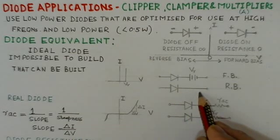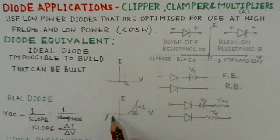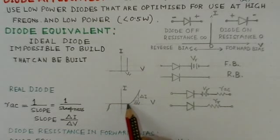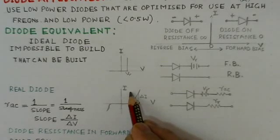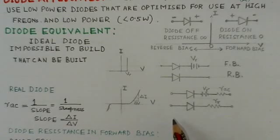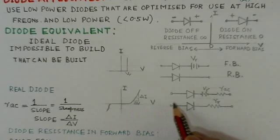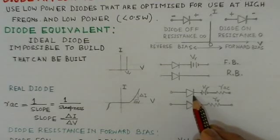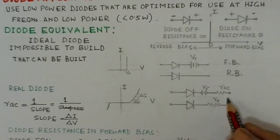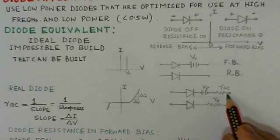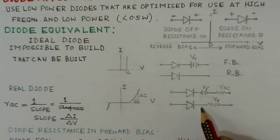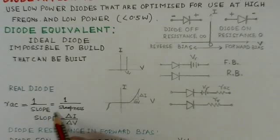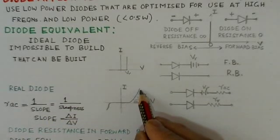In reverse bias, the equivalent circuit is like an ideal switch with infinite resistance. However, real diodes differ from this model. In the forward bias region, the characteristic is not a steep step at the cut-in voltage but has a slope. Similarly in reverse bias there is some current. The equivalent circuit for real diodes includes, in forward bias, an ideal diode with cut-in voltage V-gamma and an AC resistance R_AC in series. This R_AC is determined by taking one over the slope of the forward bias characteristic — the steeper the slope, the lower the value of R_AC.